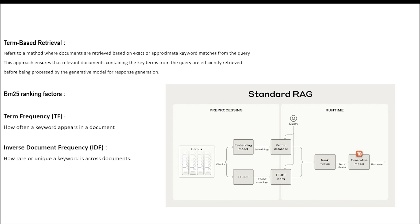BM25 balances these factors to ensure the most relevant documents appear first in a search. When a user submits a query, BM25 searches for documents that contain those exact words and ranks them based on term relevance, prioritizing documents where the keyword appears frequently while also considering the uniqueness of the term. The top-ranked documents are retrieved and passed to the language model for generating the final response. This is different from embeddings, which find contextually similar words even if they don't exactly match the query.